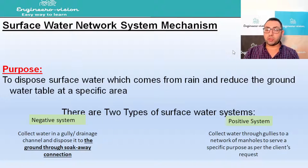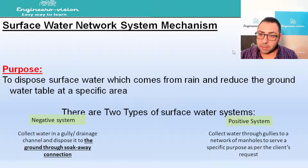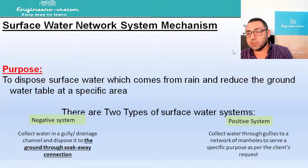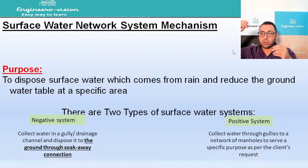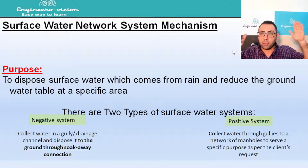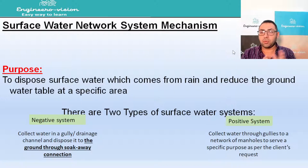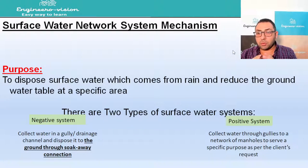These two systems are the negative system and the positive system. The positive system means we have a network — a network of galleys connected to manholes, and the manholes are connected together, flowing by gravity to a deep well, to the sea, or to a lagoon. It depends on the design, but the main concept is that there is a network — this is the positive system.